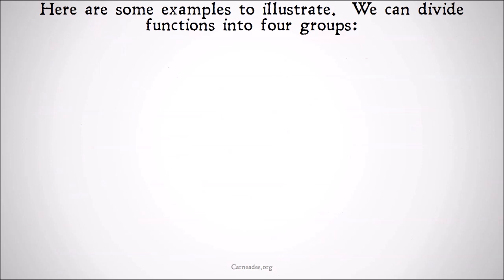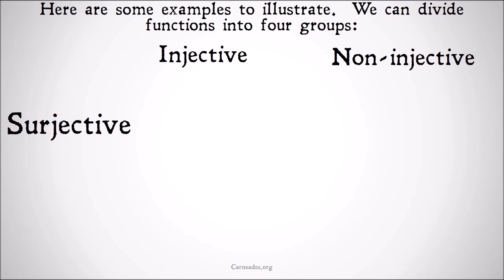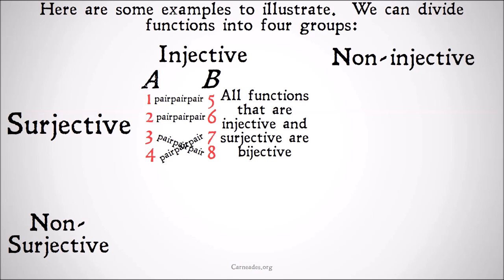Here are some examples to illustrate. We can broadly divide functions into four groups: they can either be injective or non-injective, and either surjective or non-surjective. All functions that are both injective and surjective are bijective — every member of the second class is used, and every member of the range is paired with exactly one member of the domain, and every member of the domain is paired with exactly one member of the range.